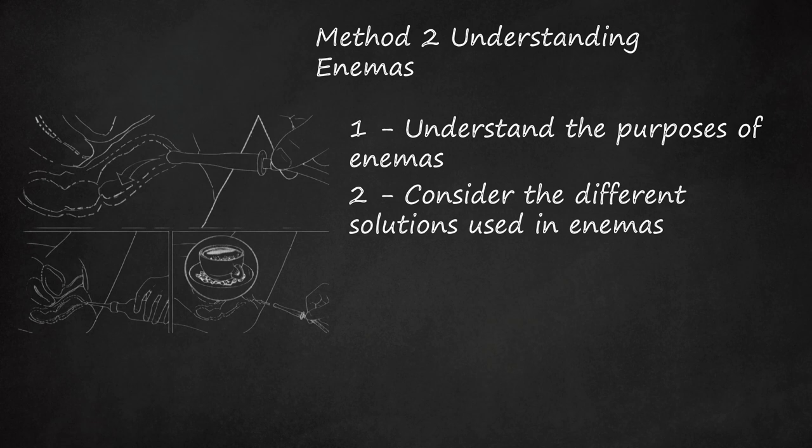A soap suds enema can be used, but only when pure castile soap is used. Other harsher soaps can be dangerous to instill in an enema. Oil retention enemas are given to help soften the stool in the rectum, making it easier to pass. Adults may use an enema up to 150 milliliters and children up to 75 milliliters. The enema should be retained for 30 to 60 minutes, giving the oil time to penetrate and coat the stool.